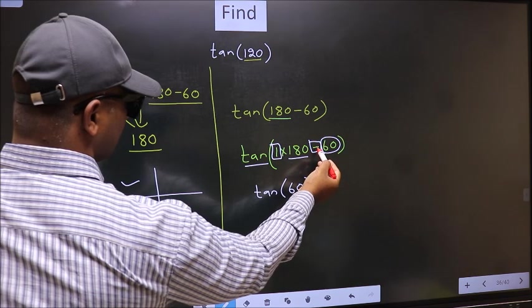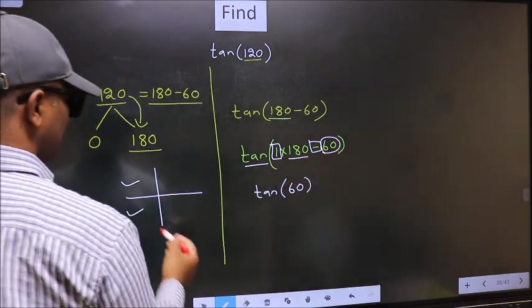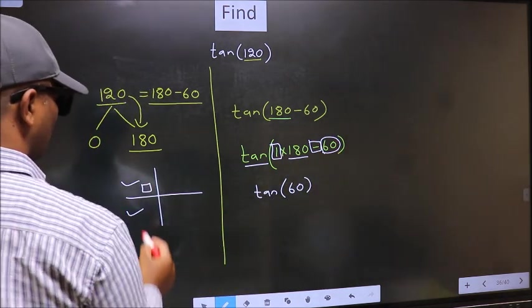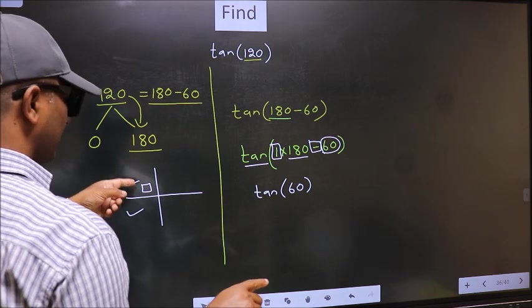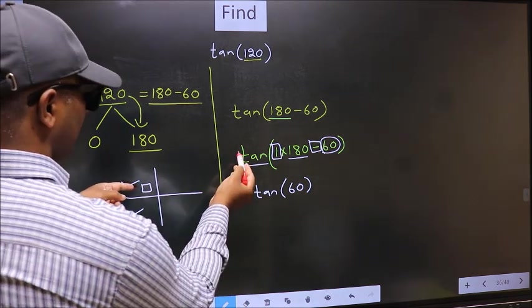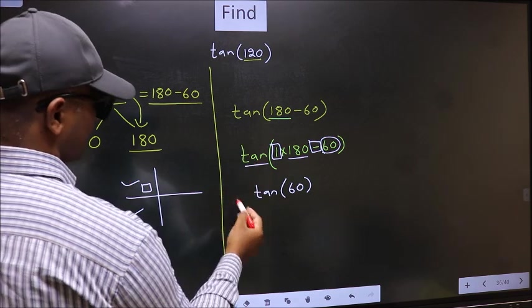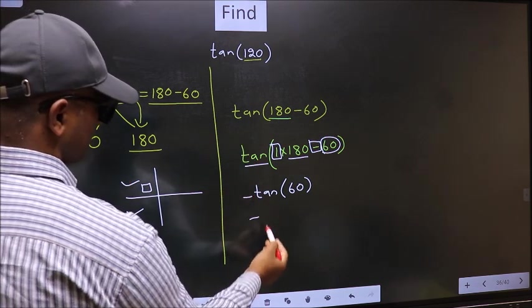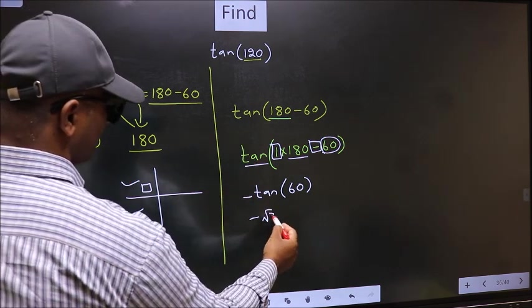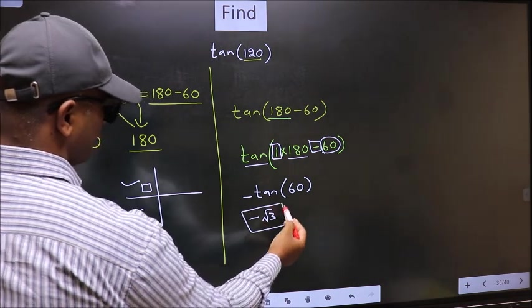Here we have negative. That means the angle lies in the second quadrant. And in the second quadrant, tan is negative. So we should put negative. So negative tan 60 is root 3. This is our answer.